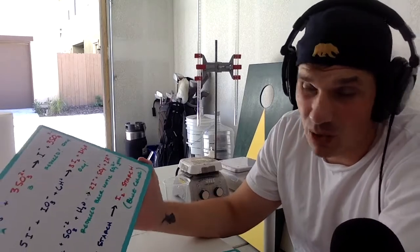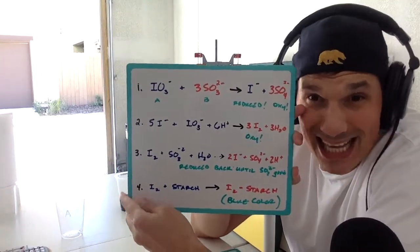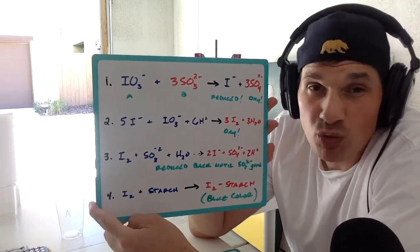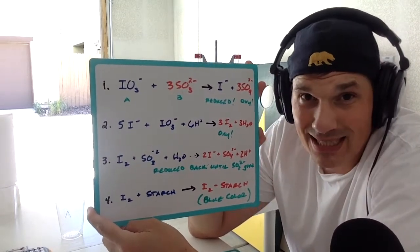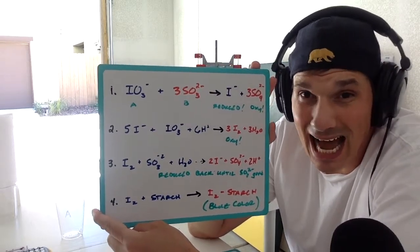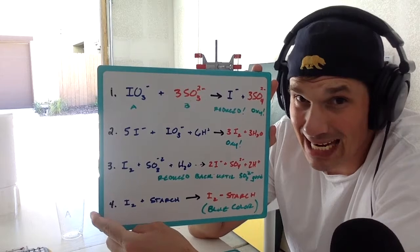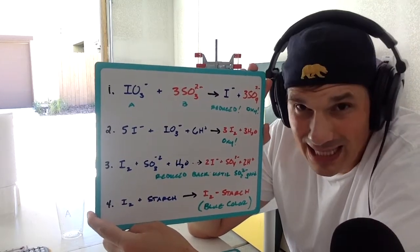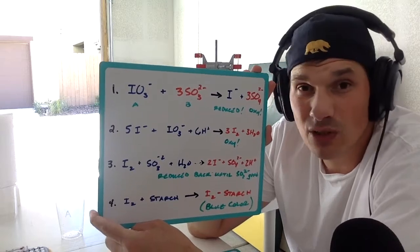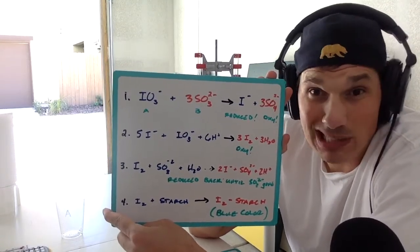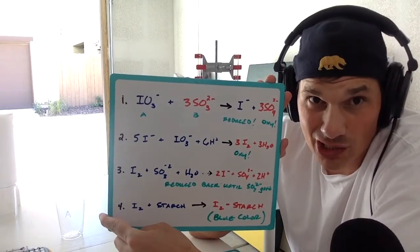Now, there's four steps of what's going on. There's actually a lot of steps going on in here. But essentially, that iodate from solution A reacts with the sulfite in solution B. The sulfite reduces the iodate into iodide, that iodine ion. And the iodate oxidizes the sulfite into sulfate. Cool thing, you know it's oxidized because it's adding that oxygen to it.